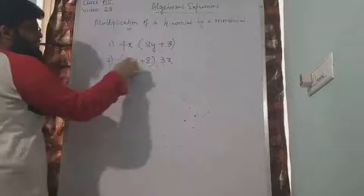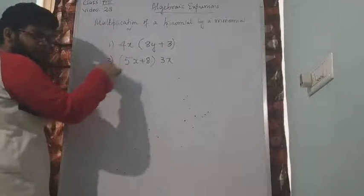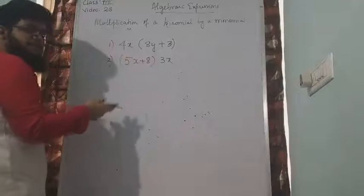So instead of writing this 3x first, I have written here. So what you can do is you can shift this 3x here and then do the multiplication. Even if it comes afterwards, it's not a problem.